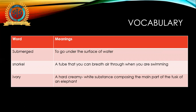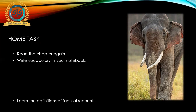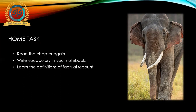Now you know the vocabulary. I will provide the soft copy of the vocabulary to the WhatsApp group so you can easily write it in your notebook. Your home task is to read the chapter again the same way I have read it for you. Then write the vocabulary in your notebook. Also learn the definition of factual recount, which is very easy and is also provided in your book. Open your book, check where the factual recount definition is, learn it and understand it.